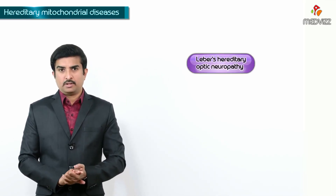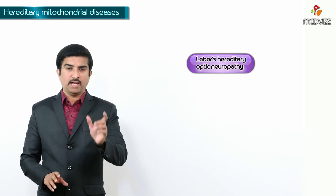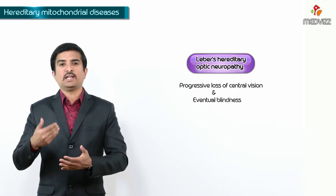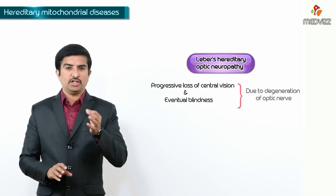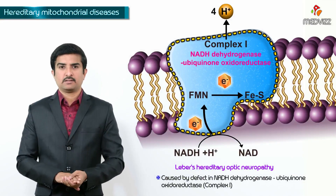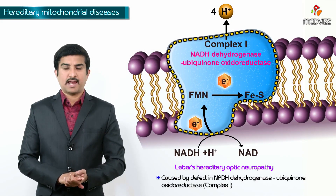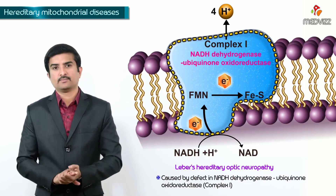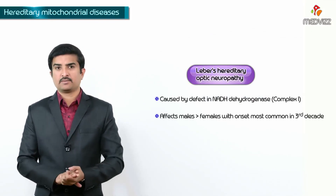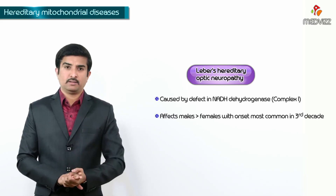The first condition we are going to discuss is Leber's Hereditary Optic Neuropathy. As the name suggests, optic neuropathy is the main clinical feature. There is progressive loss of central vision which eventually leads to blindness, especially due to degeneration of the optic nerve. It is mainly caused by a defect in Complex I, called NADH coenzyme Q reductase. This disease affects more males than females, with onset most common in the third decade.